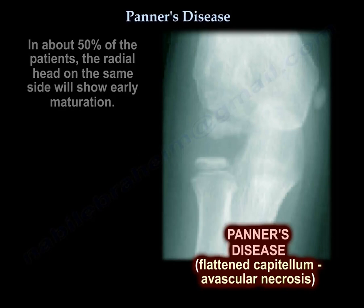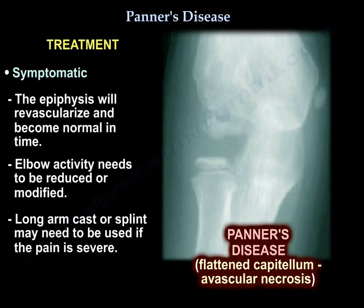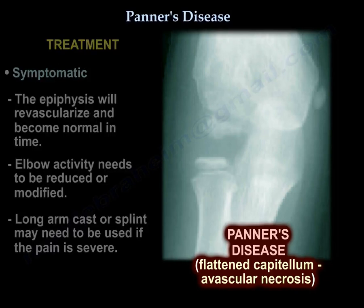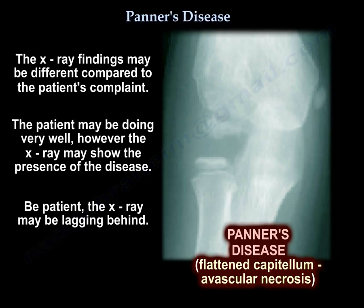Treatment is symptomatic — you just need time, because the epiphysis will revascularize, redevelop, and become normal again. You need to reduce elbow activity, and may need to use a long arm cast or splint if the pain is severe. The patient may be doing very well even though the x-ray may still show the disease — the x-ray lags behind the clinical picture, similar to Perthes disease. So be patient.